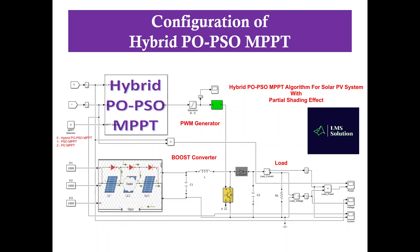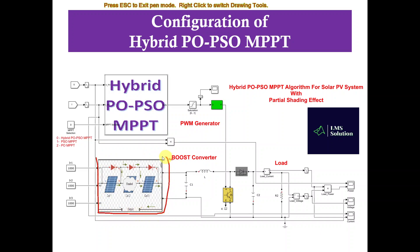This is the configuration of hybrid PO-PSO MPPT for a solar PV system. This hybrid PO-PSO MPPT can be used for extracting the maximum power during partial shading condition as well as normal irradiation condition. Here you can see the solar panel — there are three solar panels connected in series in order to implement the partial shading effect. Each panel receives irradiation, and we can change the irradiation for each panel to implement the partial shading effect.